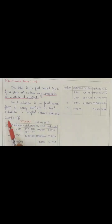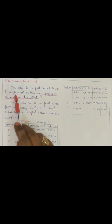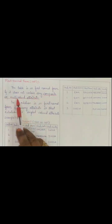Every attribute must be a single-valued attribute. Let's see this example. You can see this is the student table and here we say this table is not in 1NF. Why is it not in 1NF? Because the condition here is the relation must not contain any composite or multi-valued attribute.